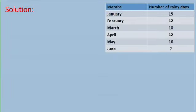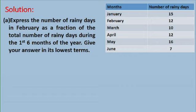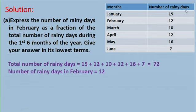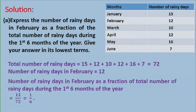Let us look at the solution. Part A: I need to express the number of rainy days in February as a fraction of the total. The total number of rainy days is 15 plus 12 plus 10 plus 12 plus 16 plus 7, which is 72 in total. The number of rainy days in February was 12. Expressed as a fraction, that is 12 over 72, which reduces to 1 over 6.